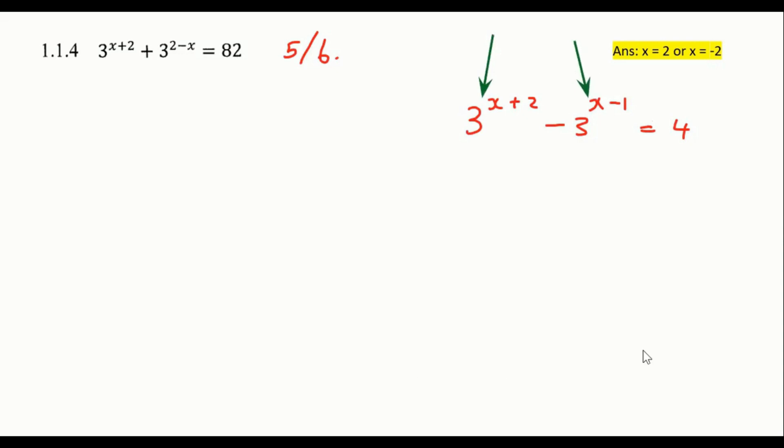So what you would do in a situation like this in a test is you would split this up into three to the power of X and three to the power of two. And then this one would be three to the power of X and three to the minus one. Then you would take out your common factor.